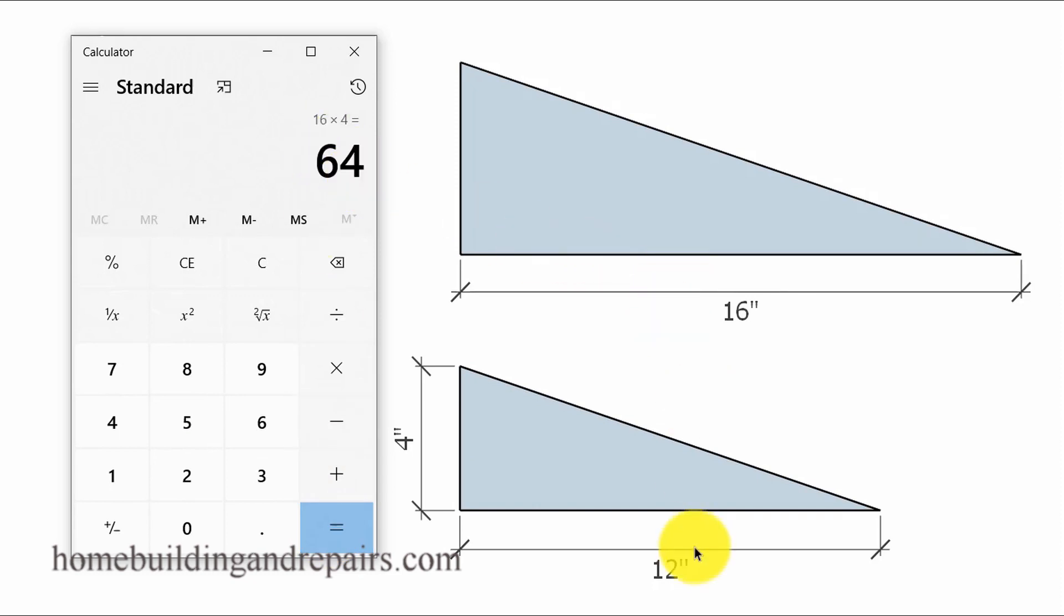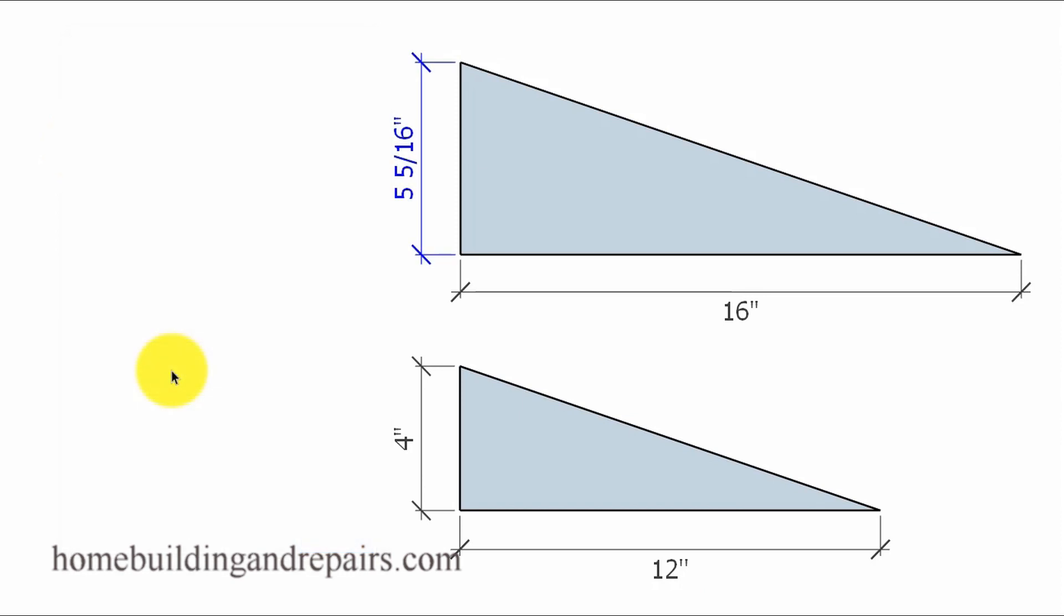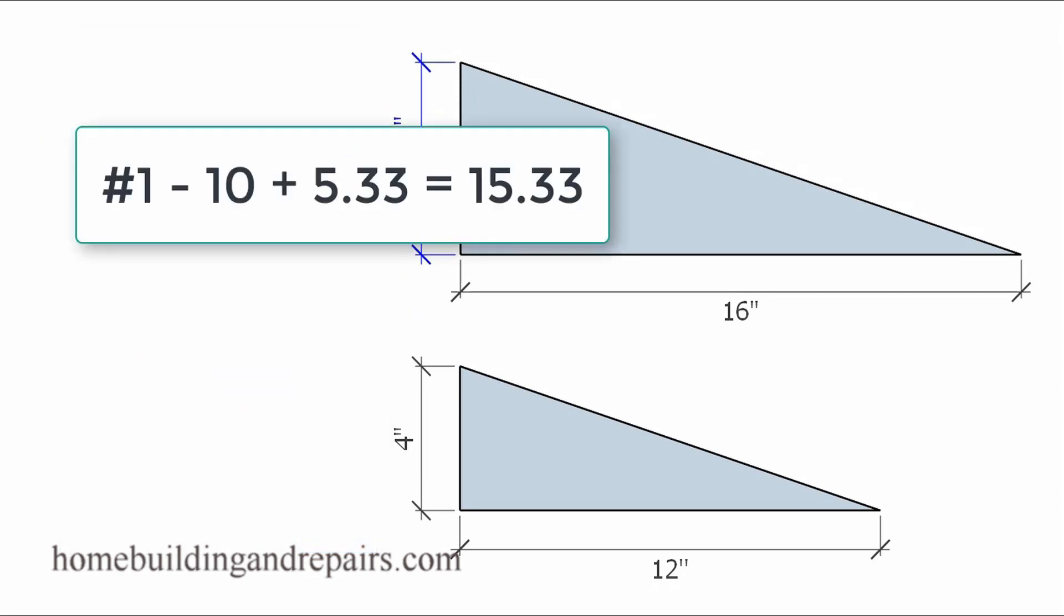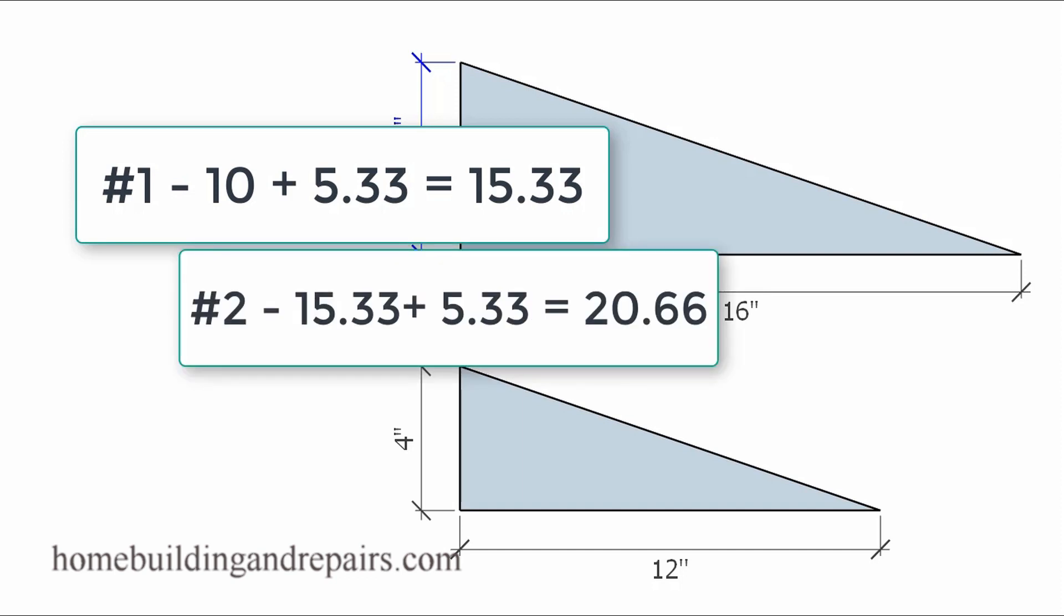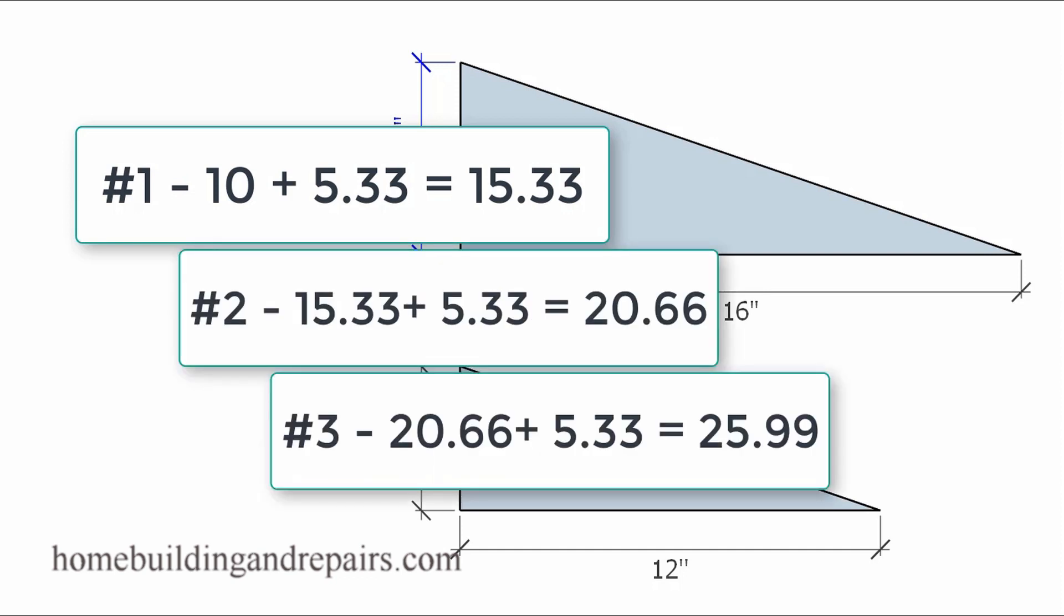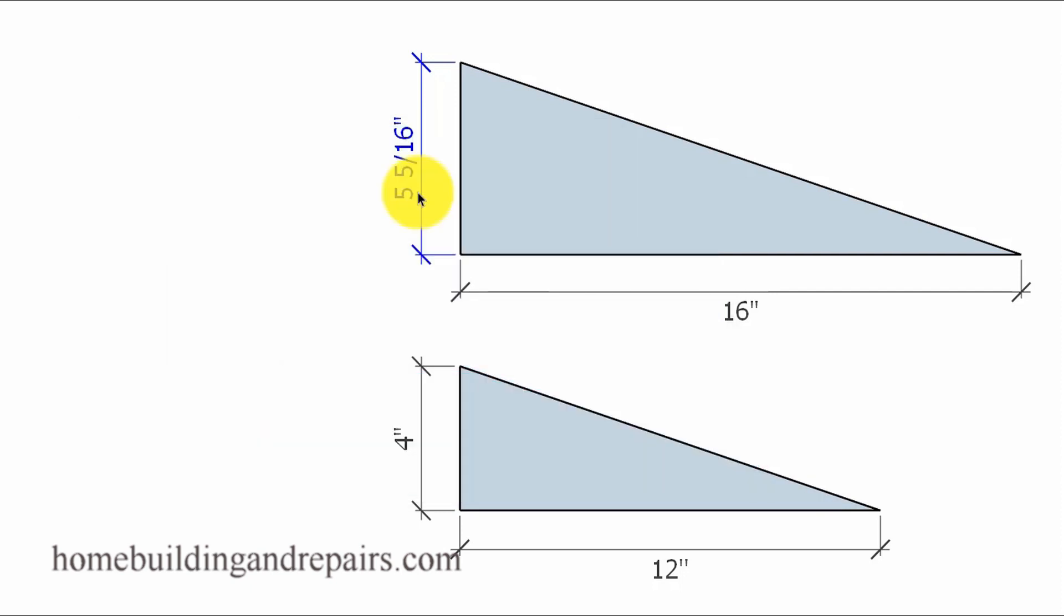Go ahead and do that; that gives us 64. And then we're just simply going to divide 64 by 12 and there's our number. And all we need to do with this number here is add it to each one of the gable studs in increments or in sections to get the next gable stud that would be spaced 16 inches on center.